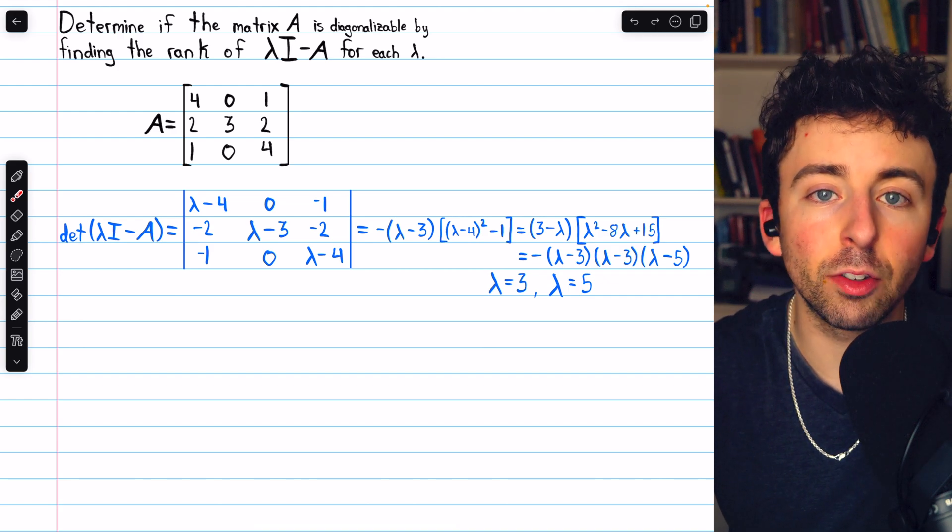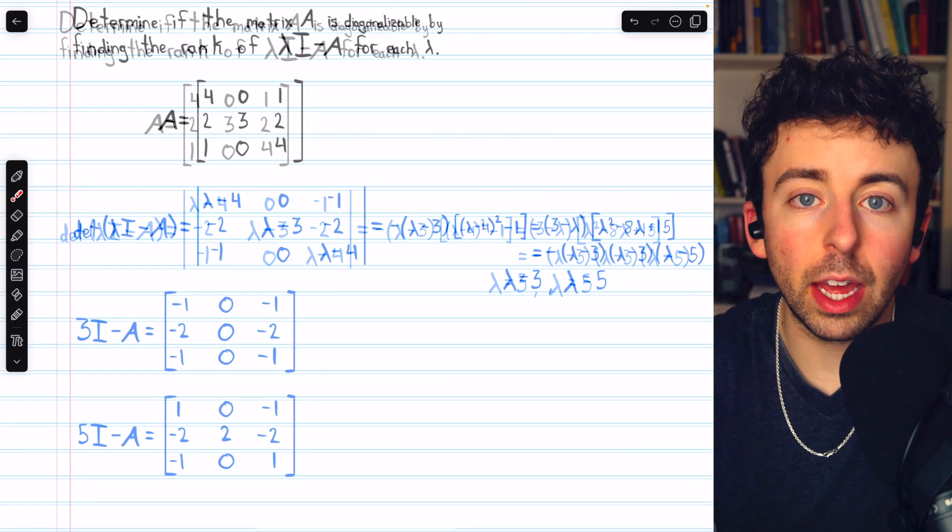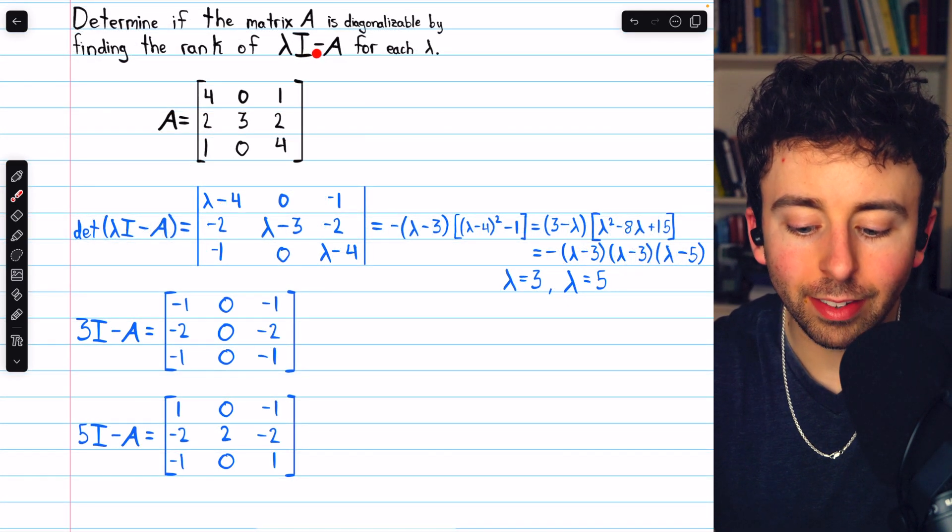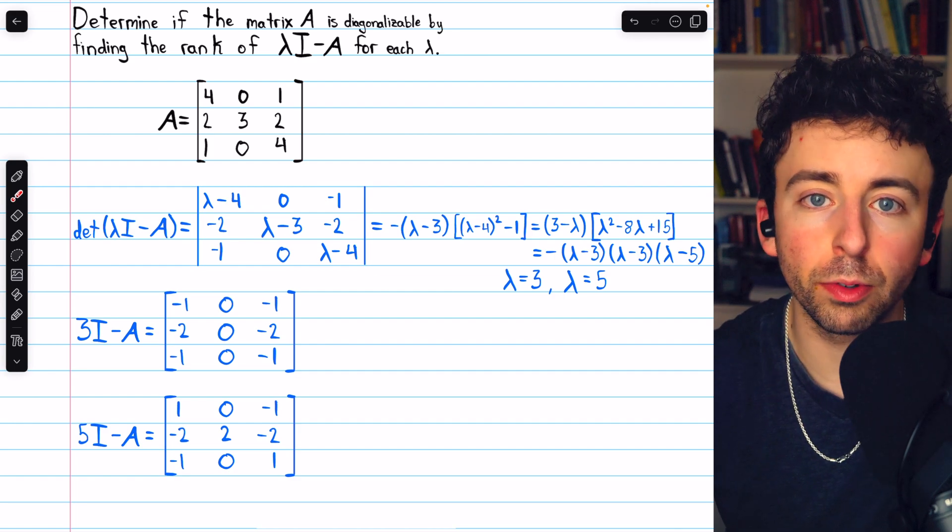By finding its roots, we get the eigenvalues, positive 3 and positive 5. Then we can find lambda I minus A for each lambda, and then we need to determine the ranks of those matrices.